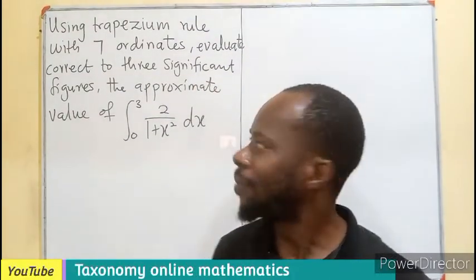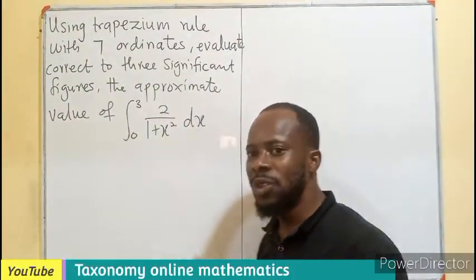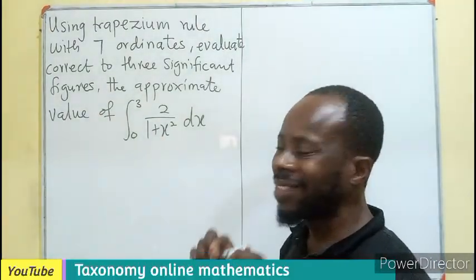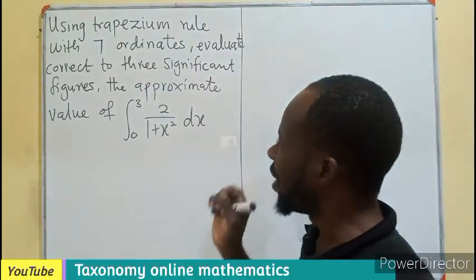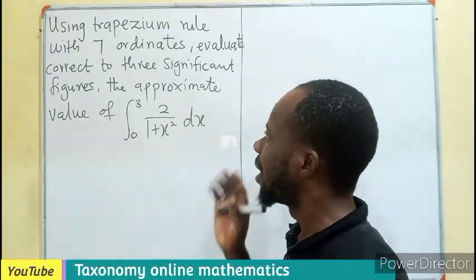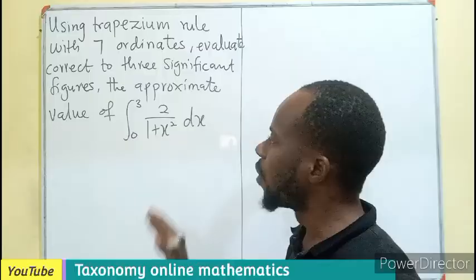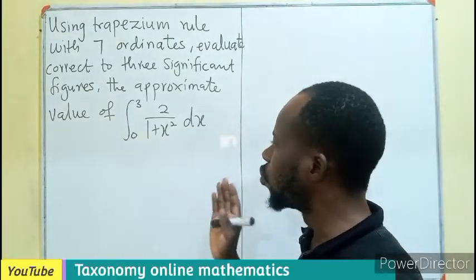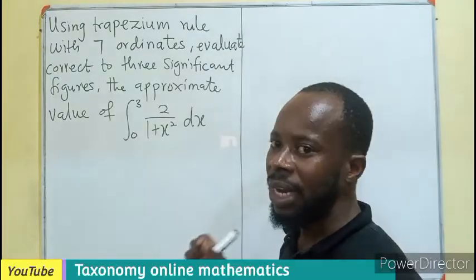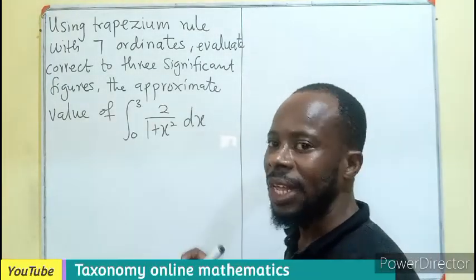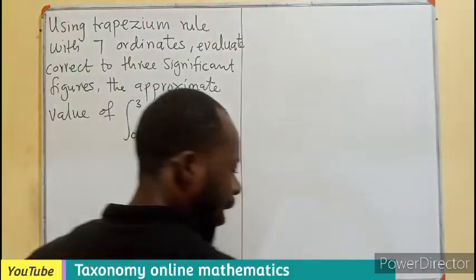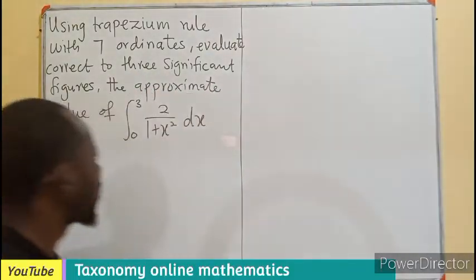Hello viewers, welcome. Let's find this using the trapezium rule. We are to use the trapezium rule with seven ordinates to evaluate, correct to three significant figures, the approximate value of the integral of 2 divided by 1 plus x squared for a limit of 0 to 3 dx.